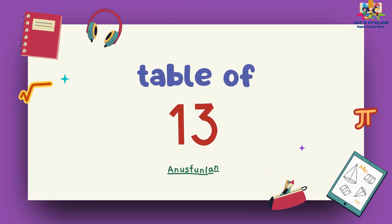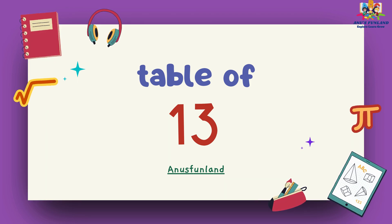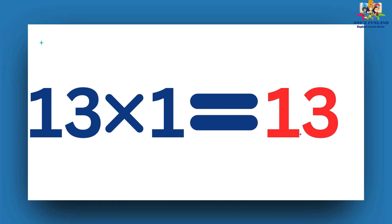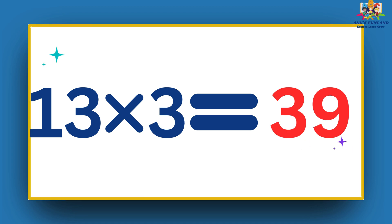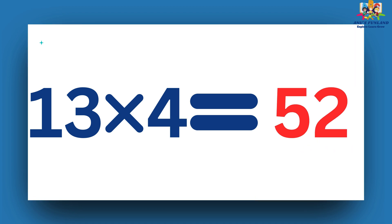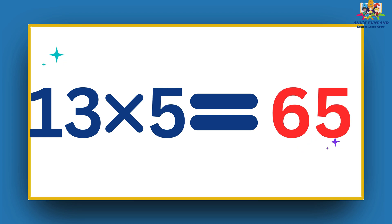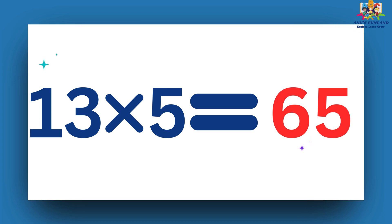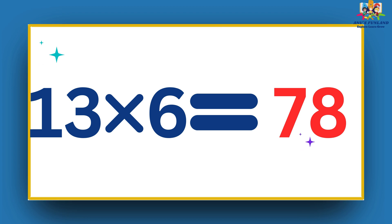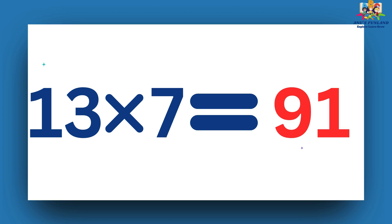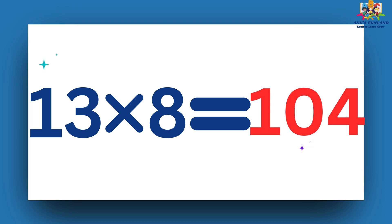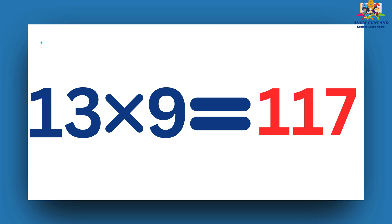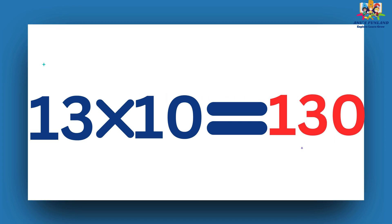Now we are going to learn table of 13. 13 ones are 13. 13 twos are 26. 13 threes are 39. 13 fours are 52. 13 fives are 65. 13 sixes are 78. 13 sevens are 91. 13 eights are 104. 13 nines are 117. 13 tens are 130.